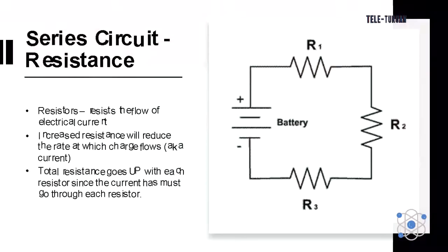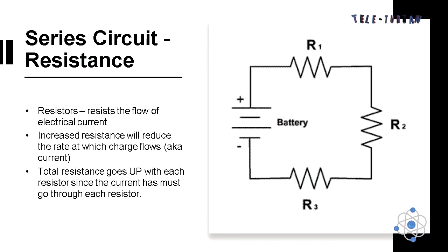Resistors resist the flow of electrical current. Increased resistance will reduce the rate at which charge flows. Total resistance goes up with each resistor since the current must go through each resistor.